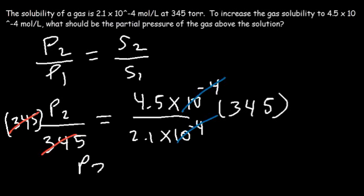And so P2 is equal to 345 times 4.5 divided by 2.1. So it's about 739.3 Torr.